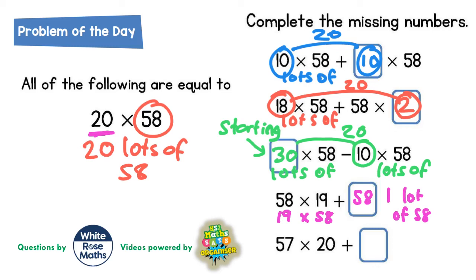And the final one we've got 57 times 20. Well, we're trying to get 58 times 20. So if we're trying to make 58 times 20 and we've already got 57 times 20, we need one more lot of 20.